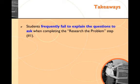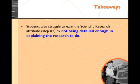A couple of takeaways: students frequently fail to explain the specific questions to ask in step one, researching the problem. Do a brainstorm — think about what you need in terms of nutrients, food, shelter, and water to live, then connect that to other living organisms. Students also struggle to earn the scientific research attribute because they're not detailed enough in explaining the research to do. There are lots of places to look — Google, a science teacher, or a local beekeeper. The point is not to know everything, but simply to know where to ask to get the right answers.